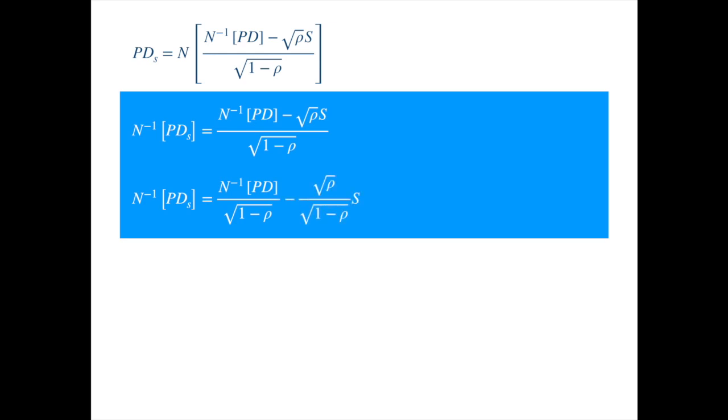Now, since S is standard normal, this expression is just a linear transformation of the standard normal. So it is a normal random variable with some mean and variance, which we can easily calculate.